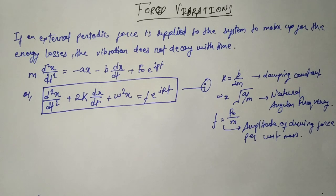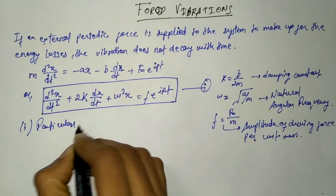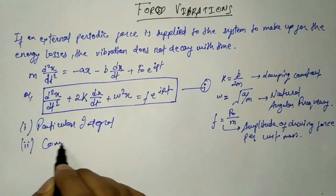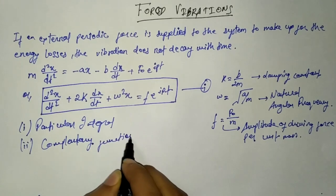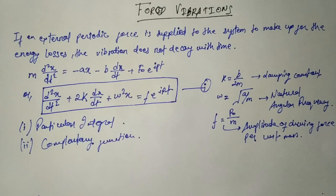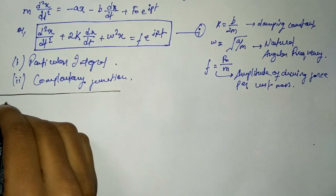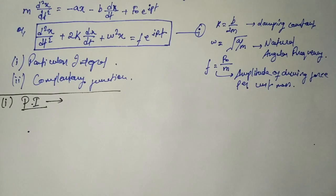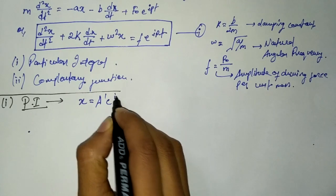To solve this equation we need two things: number one is the particular integral, and number two is the complementary function. To find the particular integral (PI), we assume an imaginary solution: x = A' e^(ipt).